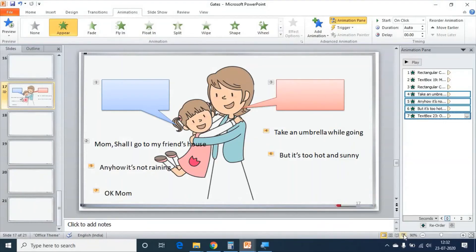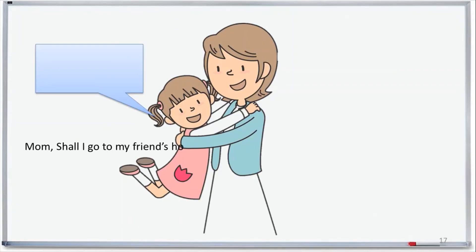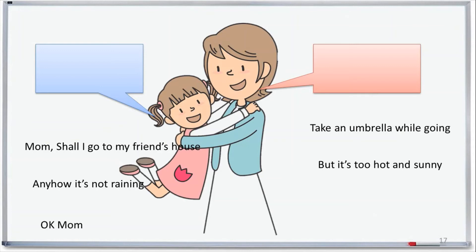Let us see the slide show. This is how it starts — my first callout, then the dialogue, then mother's callout, mother's dialogue, daughter's second dialogue, mother's second dialogue, daughter's final dialogue.